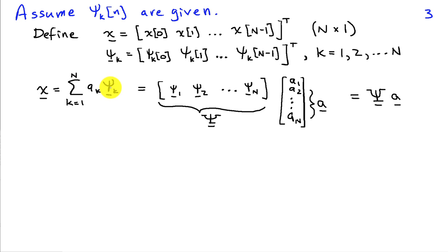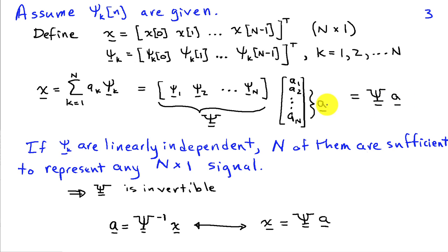And we're going to sum from k equals 1 to N. And I can collect all the basis signals into a basis matrix, capital psi, collect all the coefficients into a vector a, and just write this expansion of x in terms of these bases as a product of a matrix psi times a vector a.